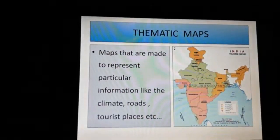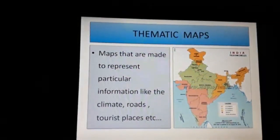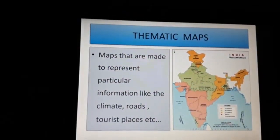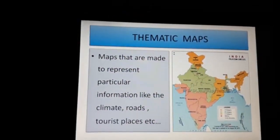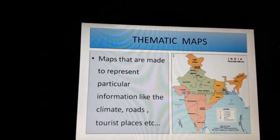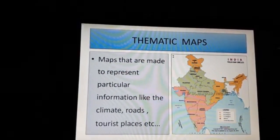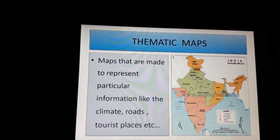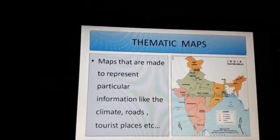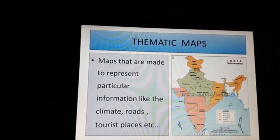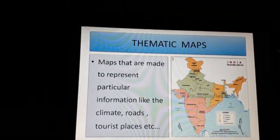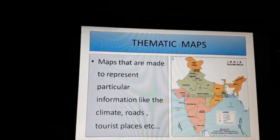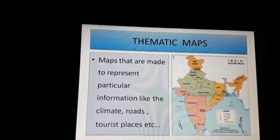Next, we learn about thematic maps. Maps that are made to represent particular information like the climate, roads, tourist places, etc. are called thematic maps.